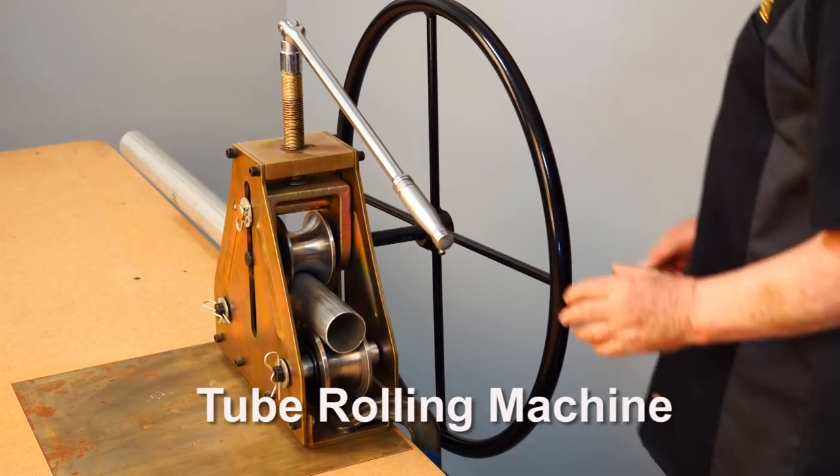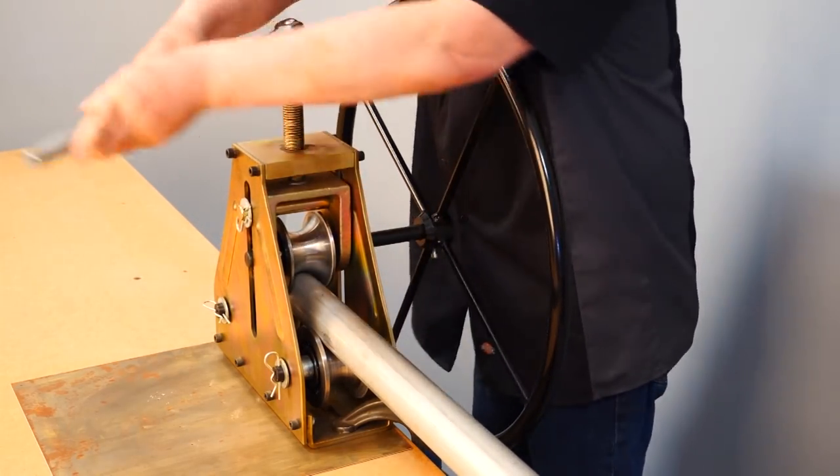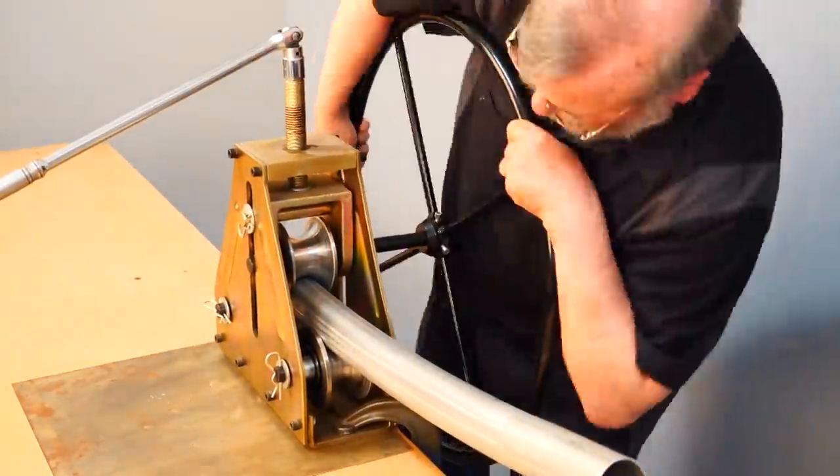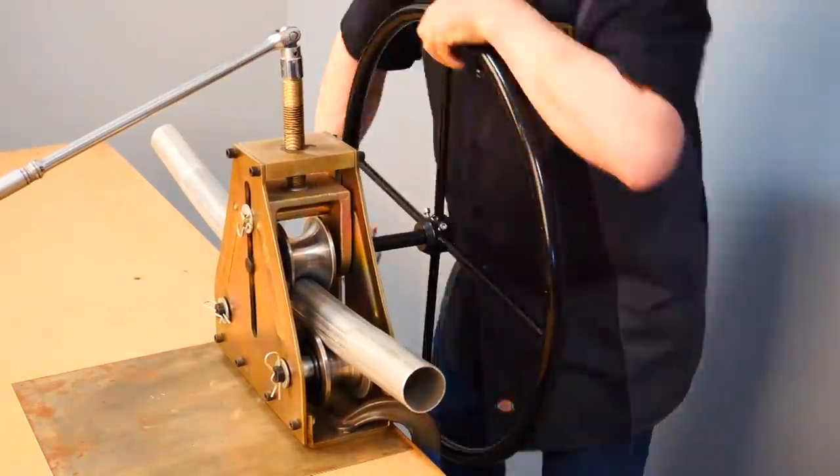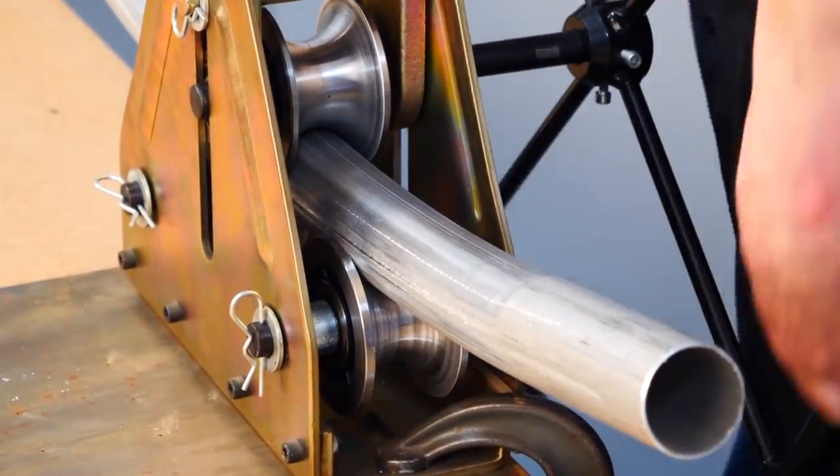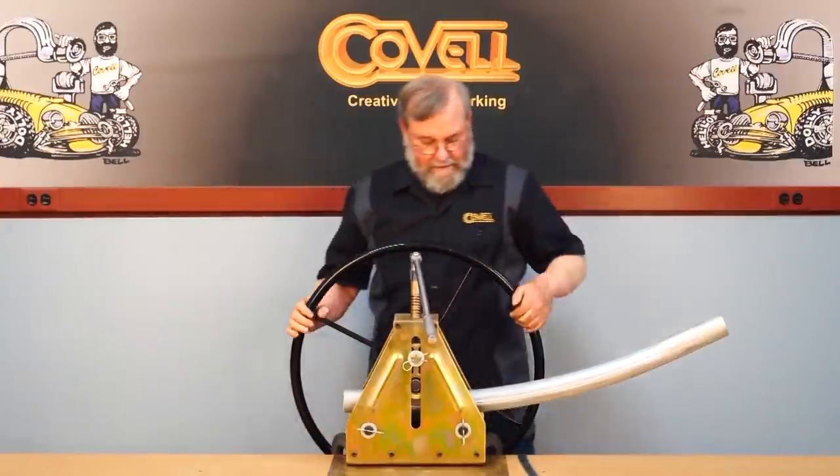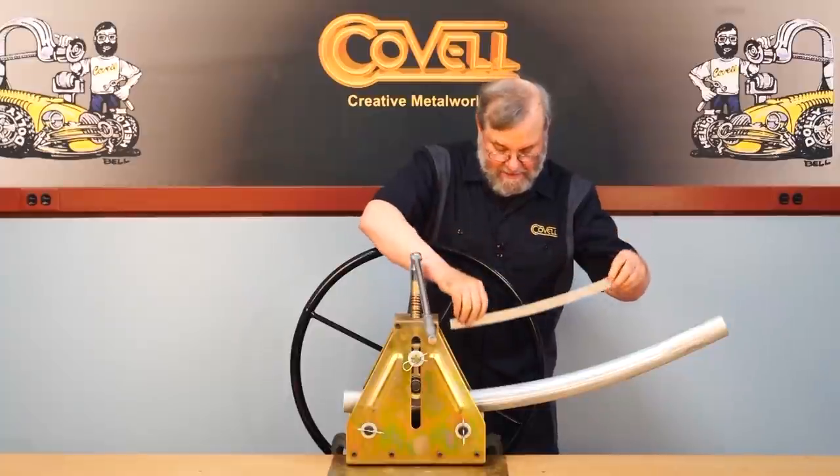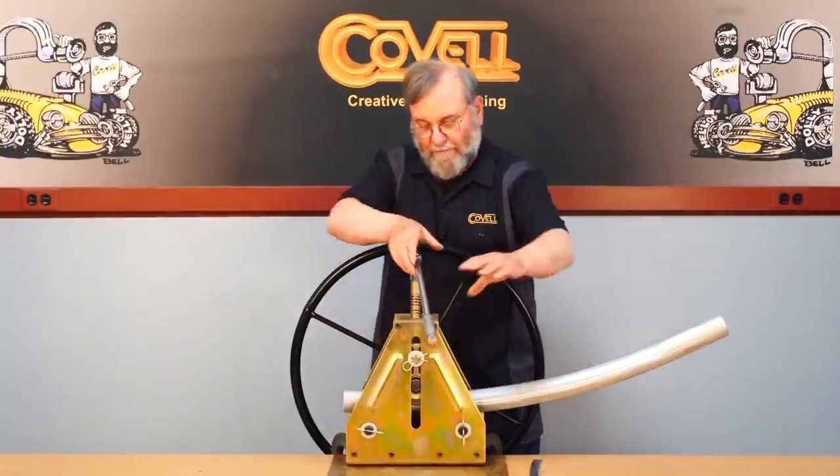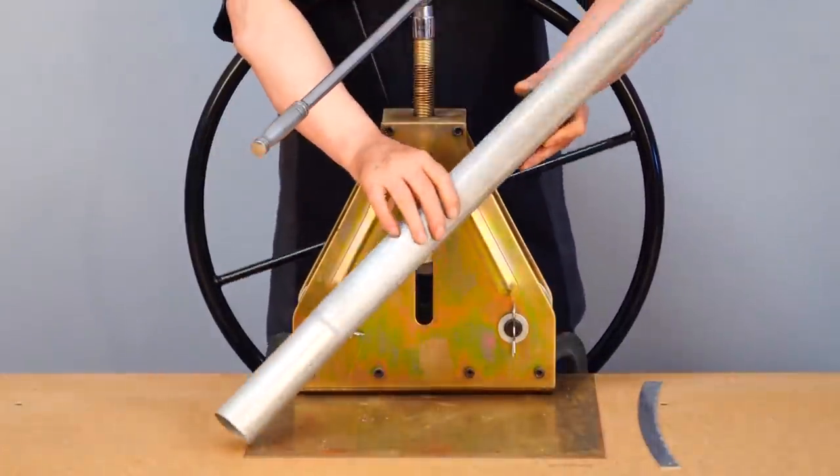This is a simple tube rolling machine. I'll show you how it works. We'll test this with the radius gauge and it looks like it's just about perfect. So we'll take this out. That's how you curve tubing.